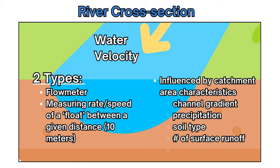From gathering information on velocity, we can infer various characteristics about the river such as the channel gradient, the amount of precipitation in the water system and watershed, the soil type, and the amount or volume of water in the surface runoff. We can also relate this to the river's hydrograph to get a clearer picture of what is happening within the river system.